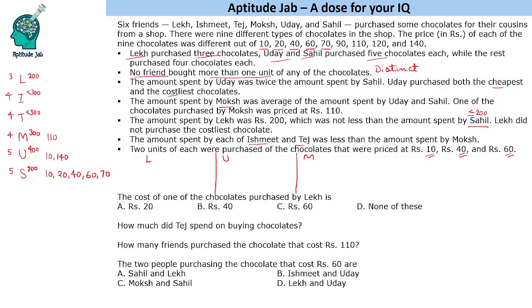The last constraint says two units were purchased of chocolates priced at 10, 40 and 60. So we can have only two chocolates of each of these types. Sahil has already bought one each of 10, 40 and 60, so we can only buy one more each of 40 and 60, and no more of 10 — since two of 10 are already purchased.